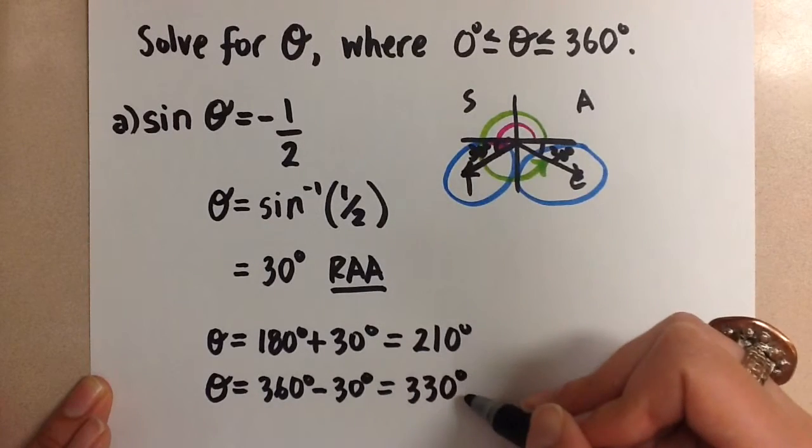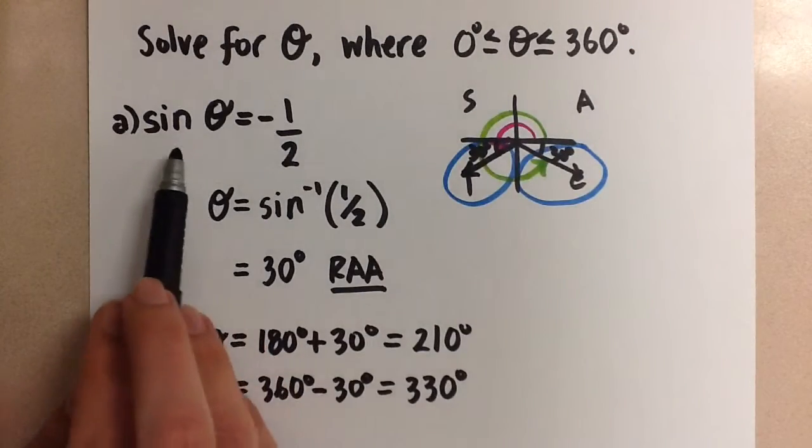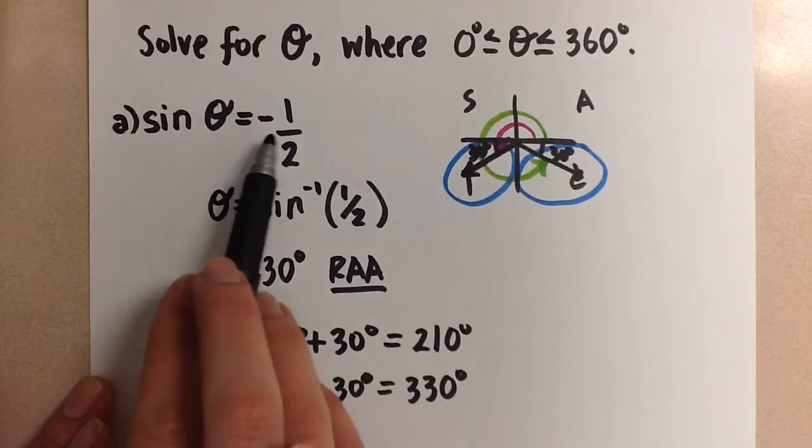So these are the two values that satisfy this equation. If you plug that into your calculator for a check you'll see that both angle values give us a negative one half.